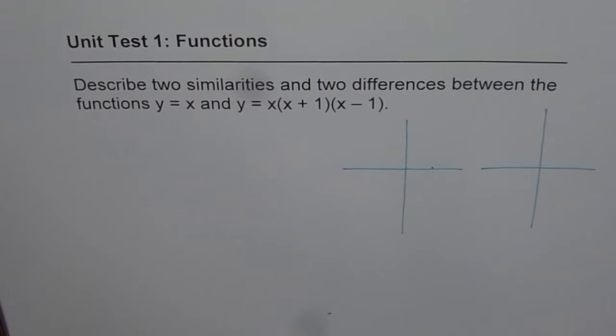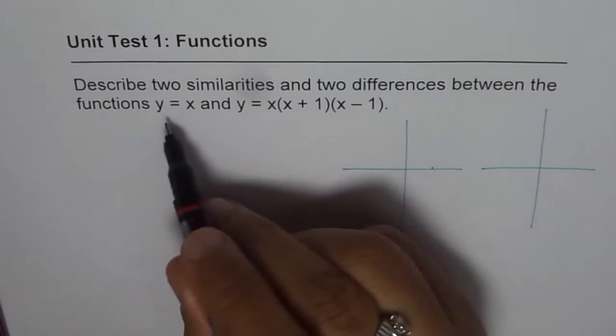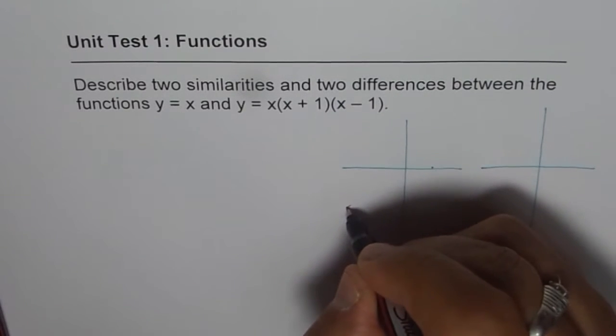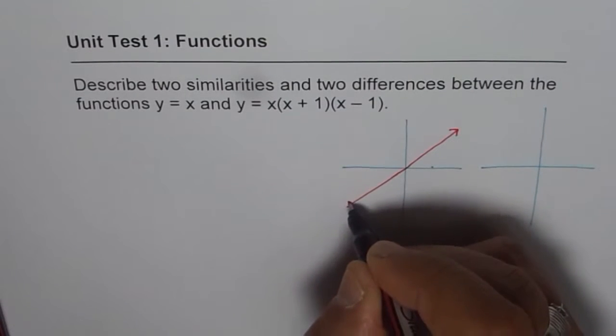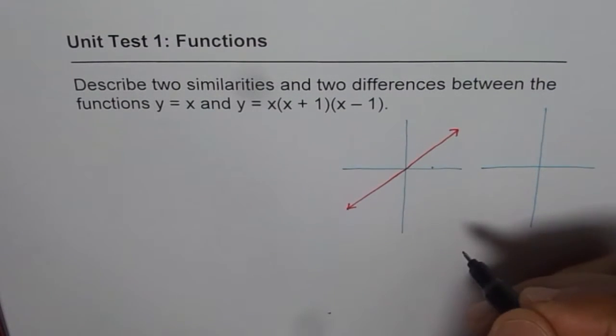The first one is y equals x which is a straight line diagonally across. It divides our plane into two equal halves.